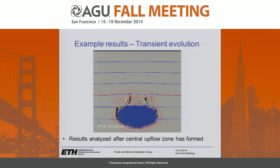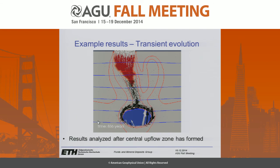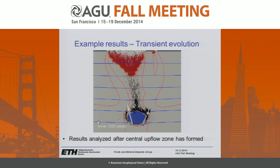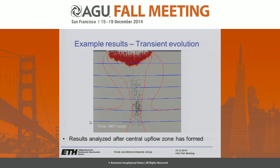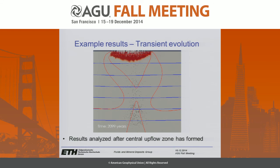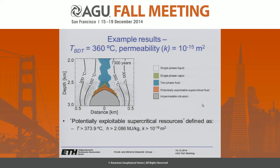You'll see a number of small upflow plumes develop initially on the margins of the intrusion, which will gradually merge over the center of the intrusion as the intrusion gets smaller. We analyze our results after this central upflow zone has formed to facilitate comparison between different geological configurations. First, I'll show results for a system with a brittle-ductile transition temperature of 360 degrees Celsius and a host rock permeability of 10⁻¹⁵ square meters, which is a reasonable assumption for crystalline basement in these settings.